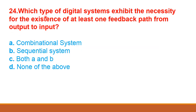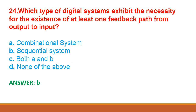Next question: which type of digital systems exhibit the necessity for the existence of at least one feedback path from the output to input? Option A: combinational system, option B: sequential system, option C: both A and B, option D: none of the above. The correct answer is option B: sequential system, because in sequential systems only, we have feedback.